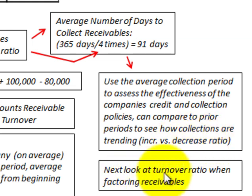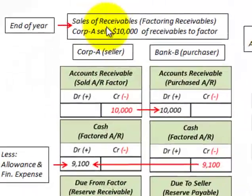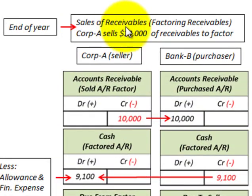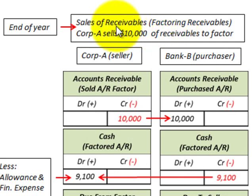Next, we'll look at how our receivables ratio is affected when we factor some of these accounts receivable — that is, when we sell off some of them — and we'll look at the expenses involved in this factoring.